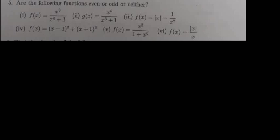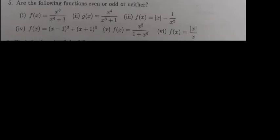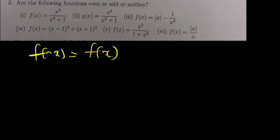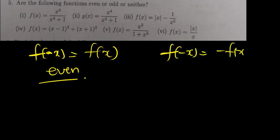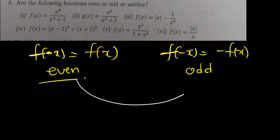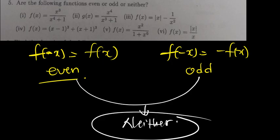Let's talk about even and odd functions. How do you know that a certain function is even, odd, or neither? For a function to be even, f(-x) should equal f(x). If plugging in negative x gives the original function, it is even. If f(-x) gives negative f(x), then the function is odd. If neither condition is met, the function is neither even nor odd.